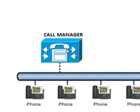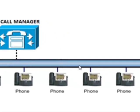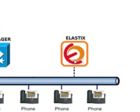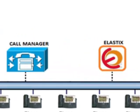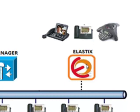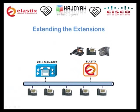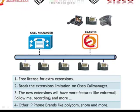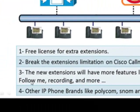As mentioned before, Cisco Call Manager requires a license to add new extensions. But after integrating Elastisk with Call Manager, you can add any new extensions to Elastisk, which can support up to more than 100 extensions. All new extensions connected to Elastisk will also get more features like voicemail, follow-me options, call recording, and more.